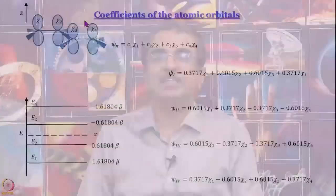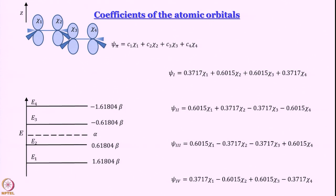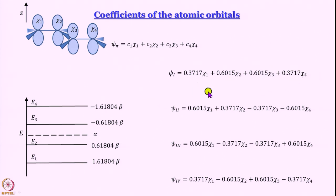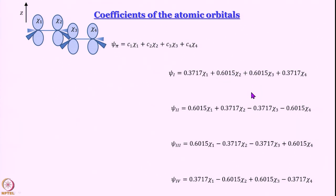Now what we will do is draw a cartoon representation of these MOs. Here you see we have drawn chi_1, chi_2, chi_3, chi_4 as orbitals with the same height because they are all independent p orbitals. Now we are going to multiply their height by the coefficient. So the heights are going to change — for psi_I, for example, chi_1 will be a little more than half the height of chi_2. The height of chi_2 and chi_3 will be the same because both have coefficient 0.6015.